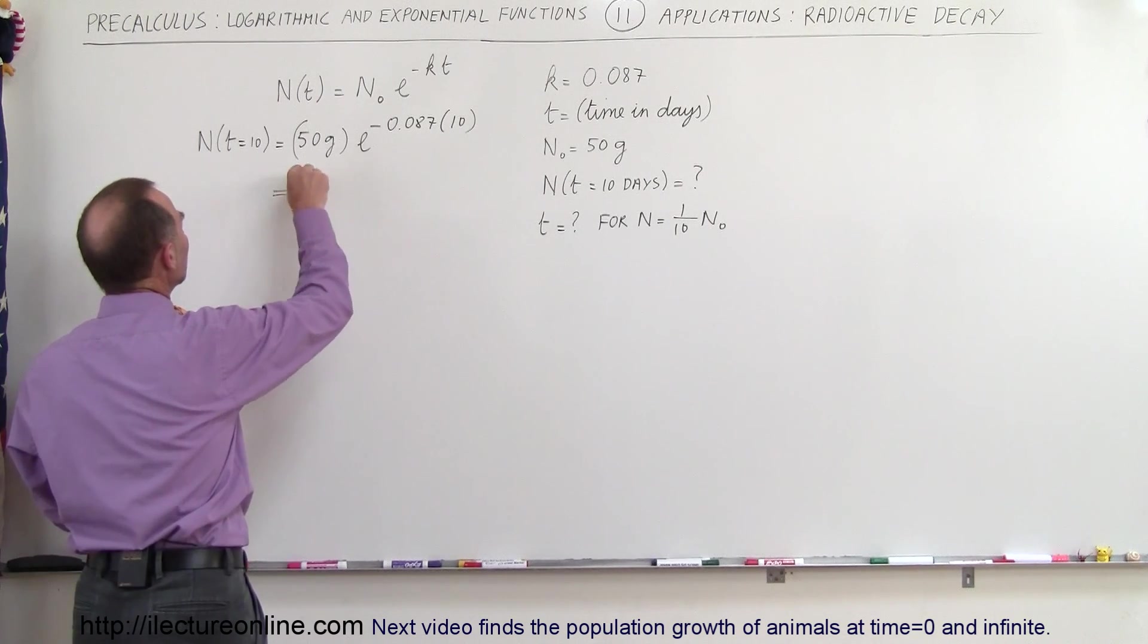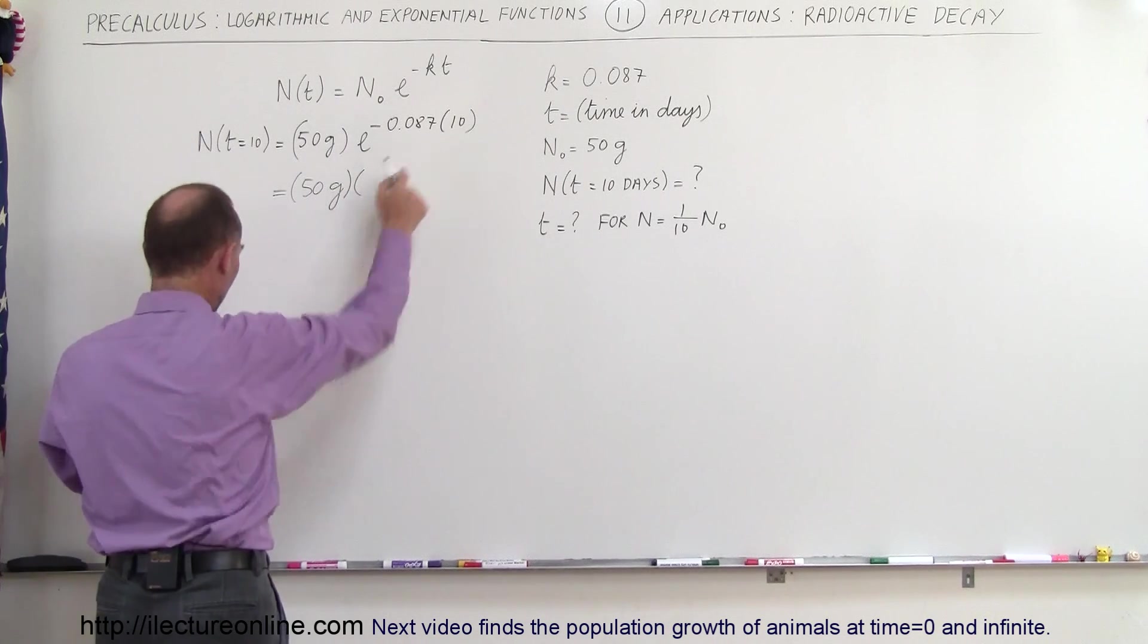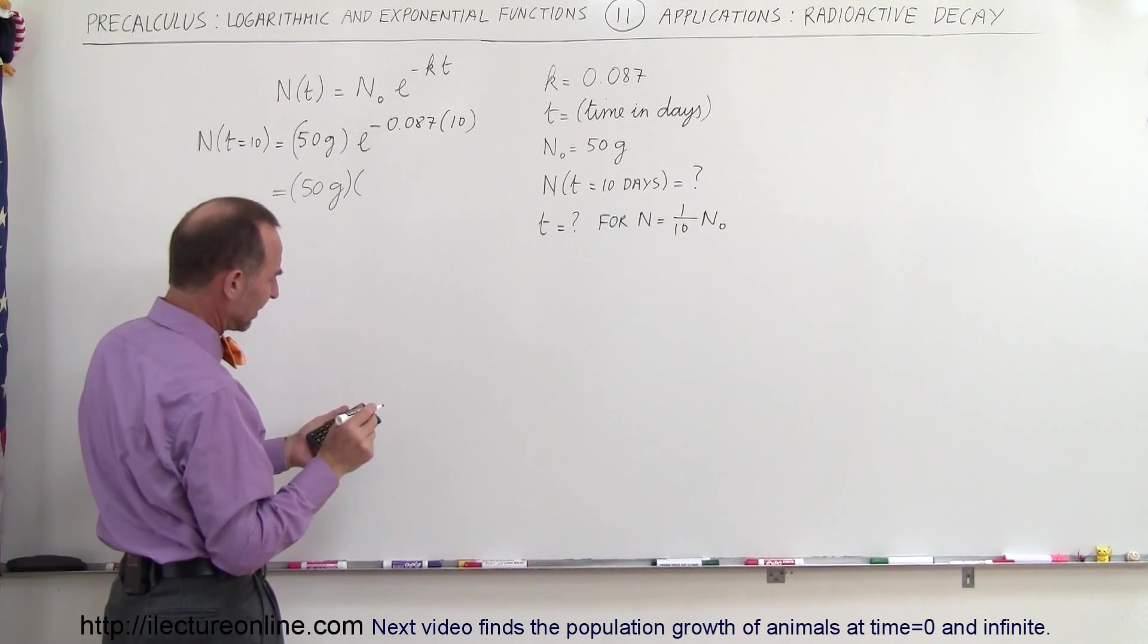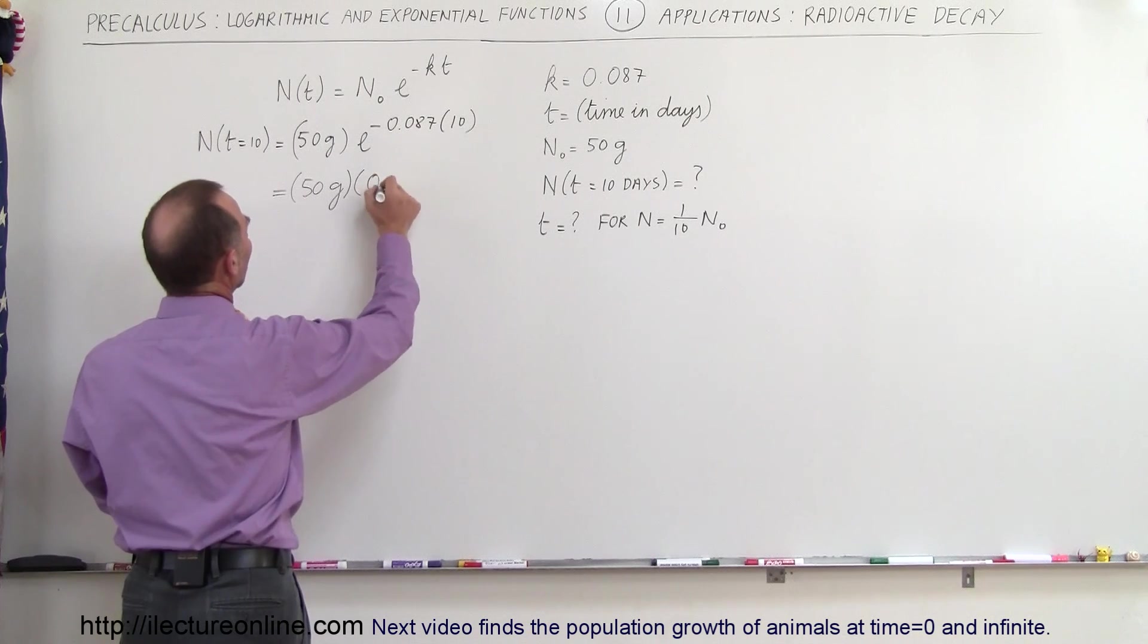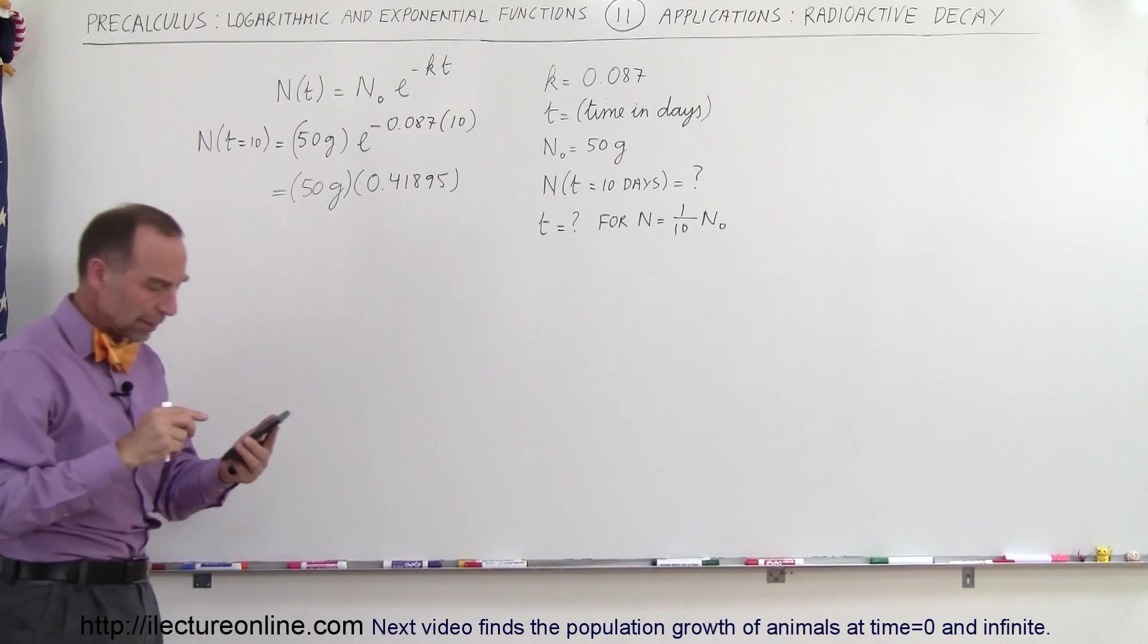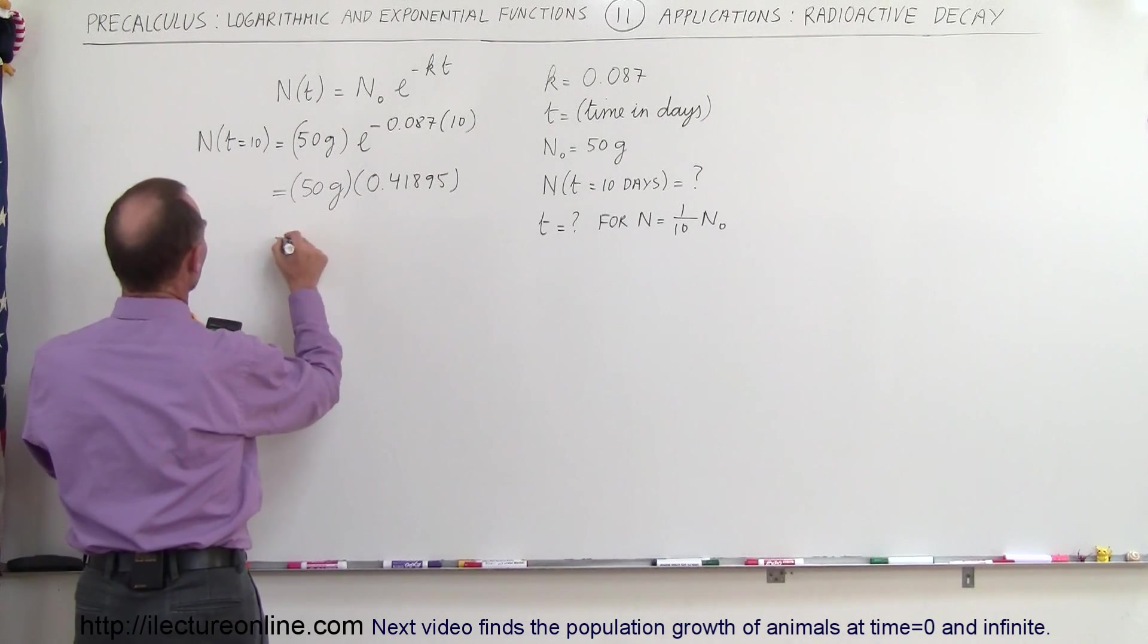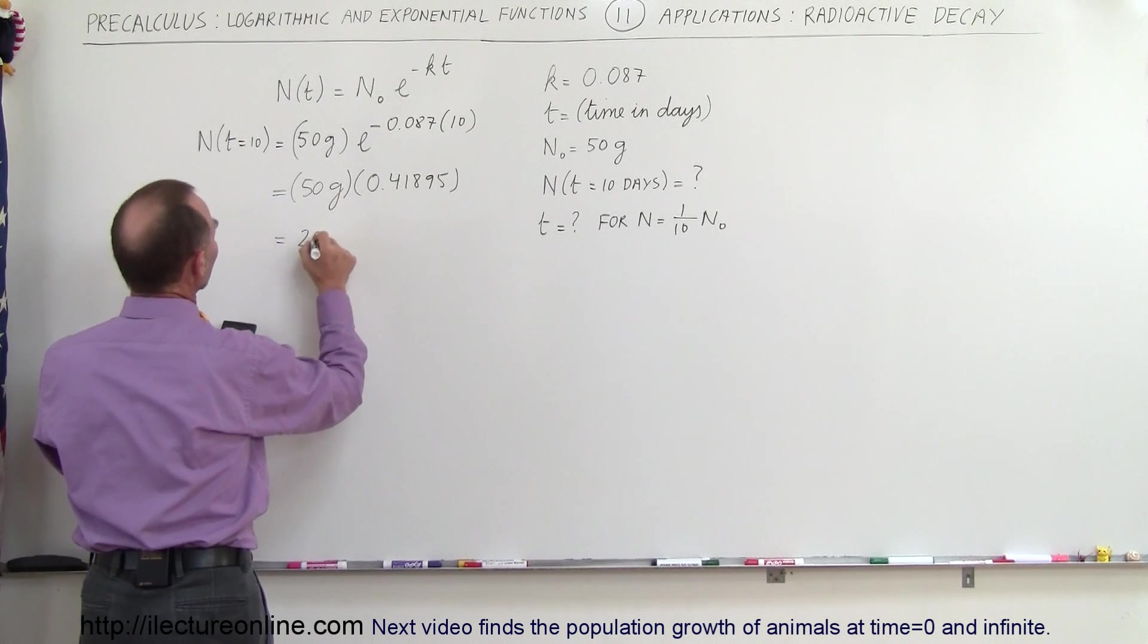So let me go ahead and give you an intermediate result. So we have 50 grams multiplied times this quantity right here which should be 0.41895, and then times 50, and we get this is equal to 20.95 grams.